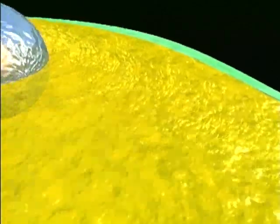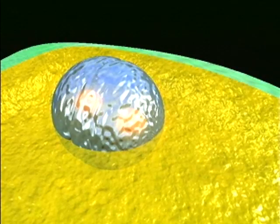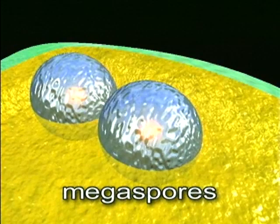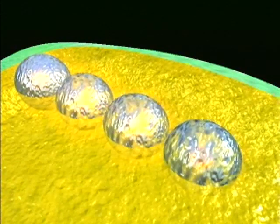Inside the megasporangium, the single sporocyte cell divides by meiosis to produce four haploid megaspores. However, three of these degenerate.